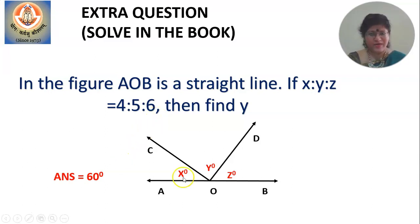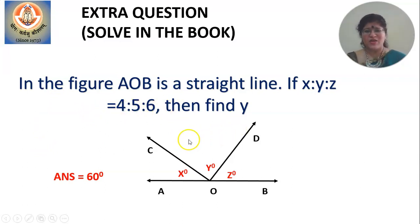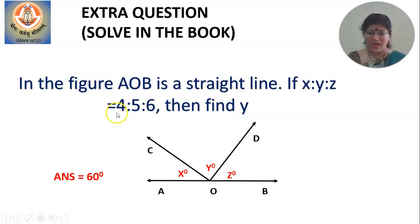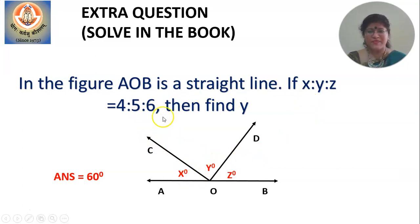Since X is already used, let the common multiple be A. Then 4A plus 5A plus 6A equals 180 degrees. Find the value of A. Then 4A gives X, 5A gives Y, and 6A gives Z. The answer will be angle Y equal to 60 degrees.